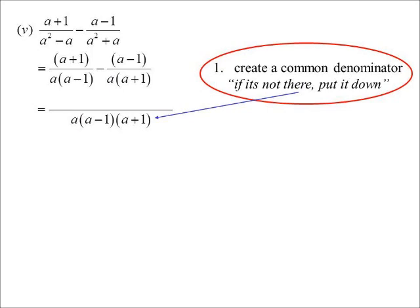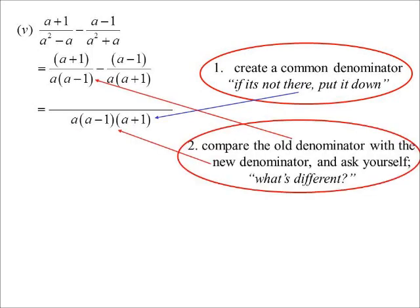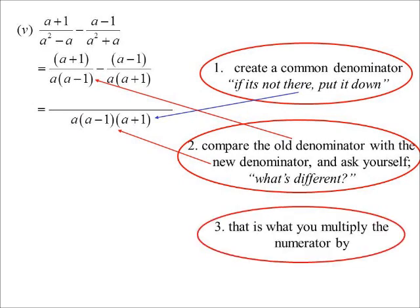Now to work out the numerator, I ask myself, well, what's different? So that first fraction, the denominator was a, a minus 1. What's different? Well, the difference is I now have a factor of a plus 1. So whatever you do to the top, you must do to the bottom. So the top becomes a plus 1 squared.